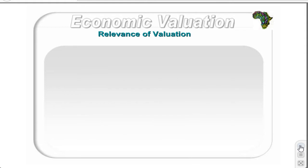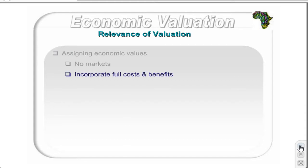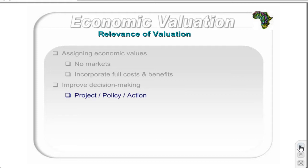Economic valuation is important because not all impacts of an economic activity are calculated and taken into account. Valuation strives to assign economic values where there are no markets so that all costs and benefits can be incorporated. Once these values are available, economic bads such as pollution can be minimized as economic incentives can be presented to firms and the polluter pays principle can be implemented. An incentive is also created to provide or maintain environmental goods such as conservation, as the economic benefits can be more clearly presented. These values can then be fed into a decision-making process, where proposed policies, projects, and actions and their alternatives can be weighed using a common monetary unit.